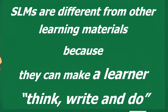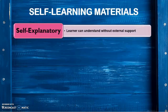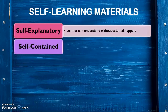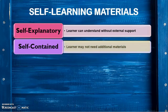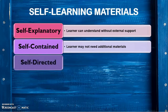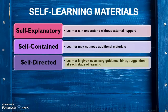We develop our study material keeping in mind three things: to make you as a learner think, write, and do. The self-learning material in the open and distance learning system is self-explanatory — we expect that learners can understand everything without any external support. Our materials are self-contained, meaning we never ask learners to go for additional material — whatever is essential to know, read, and learn is included. Our material is self-directed, meaning we give necessary guidance, hints, and suggestions at each stage of learning.